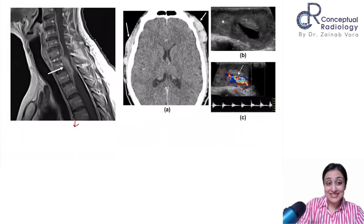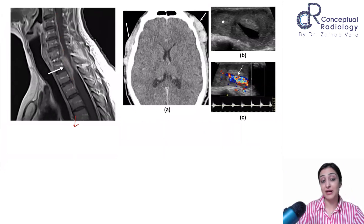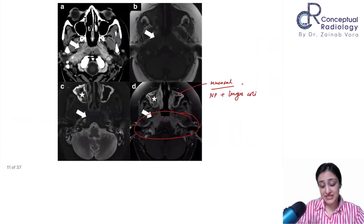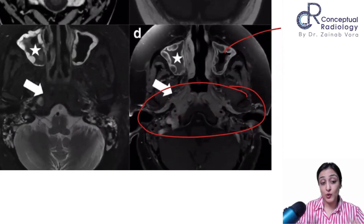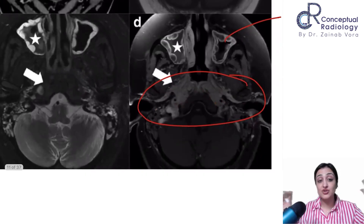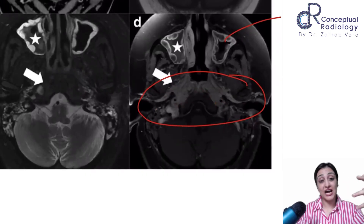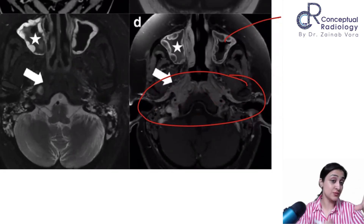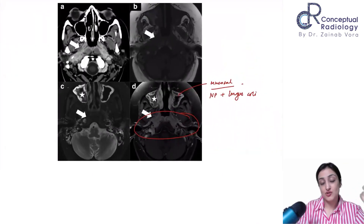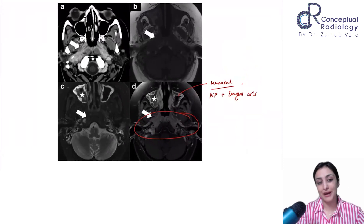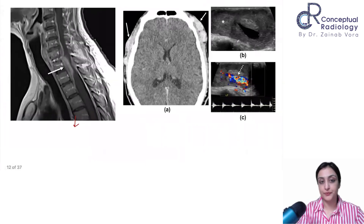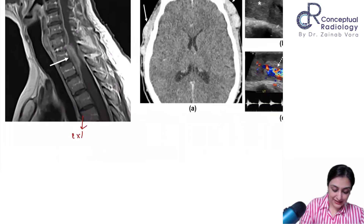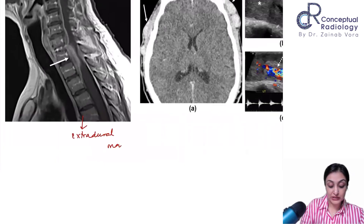Pachymeningeal thickening presenting as an extradural mass causing spinal cord compression. NPC cannot be so symmetrical. Even if bony erosion is present, it is diffusely symmetrical infiltrative soft tissue. A carcinoma would be asymmetric and much more destructive. This is slowly progressive — symmetricity, progression, response to steroids, and IgG4 levels all point to this diagnosis. Biopsy of any one site confirms it.